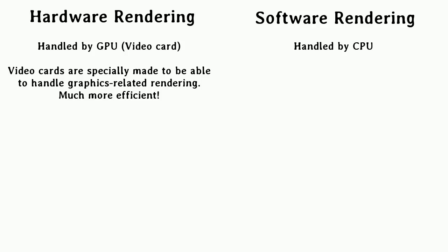If you don't know what hardware rendering is, it is essentially using your video card to handle the graphics, whereas with software rendering everything would be handled by the CPU. When you have hardware rendering available, your game's performance will be better, and you'll be able to do special actions like rotations, scaling, and recoloring your sprites, since video cards are more efficient at handling graphics than the CPU is.